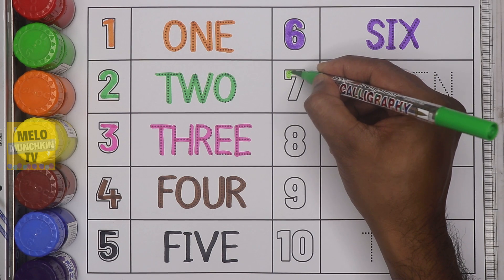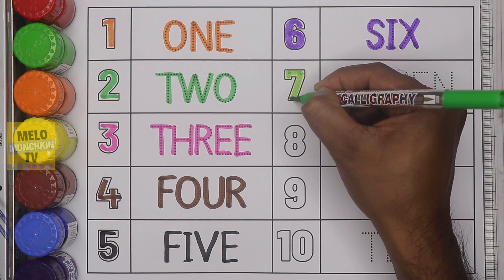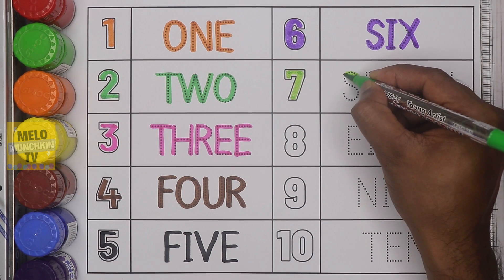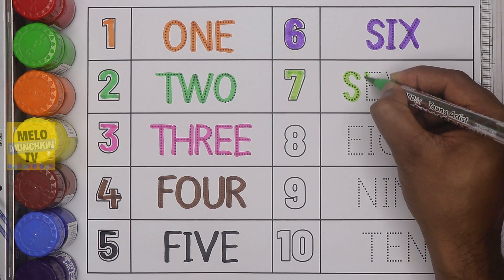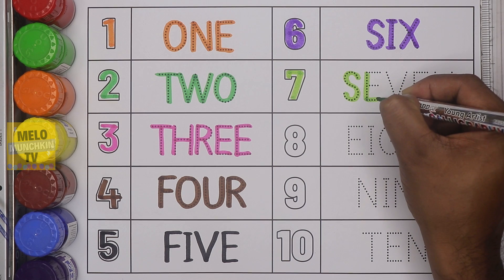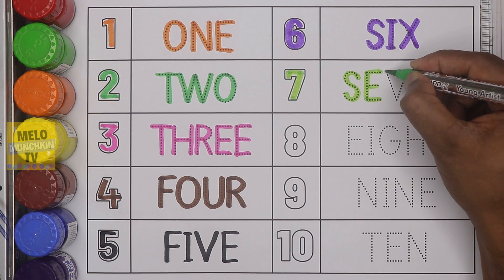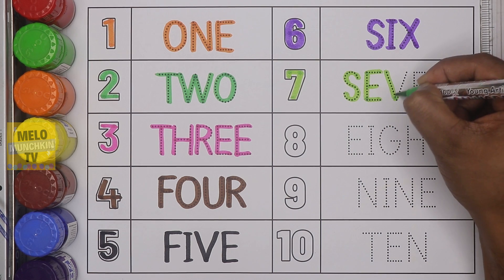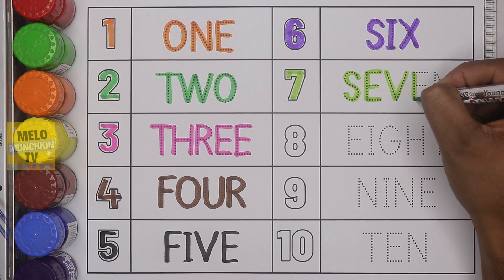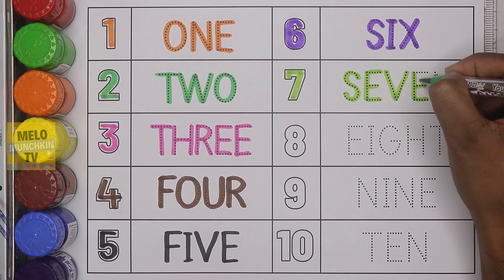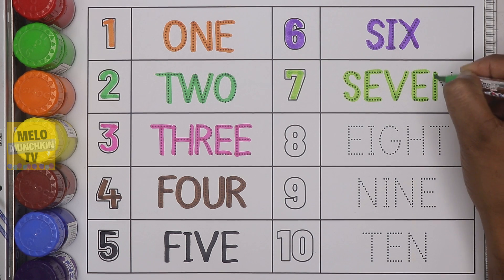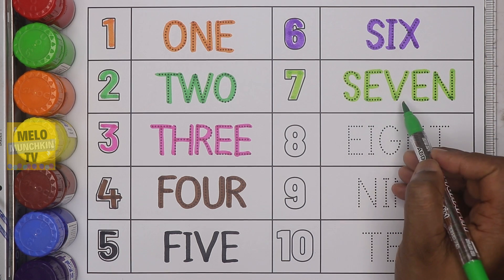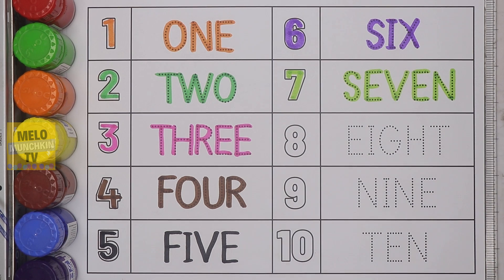Next, I'll take light green color and write number seven. This is number seven and the spelling is S-E-V-E-N, seven.